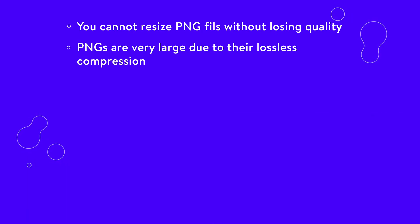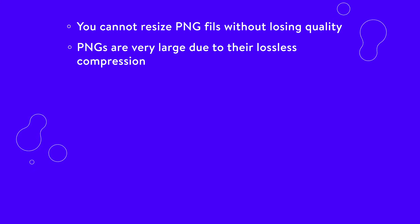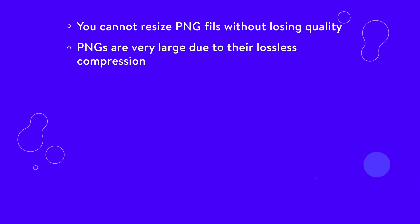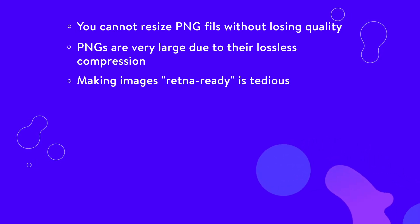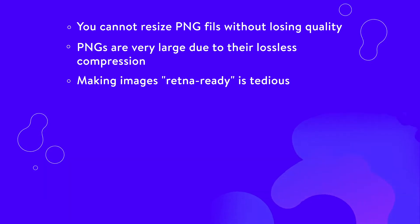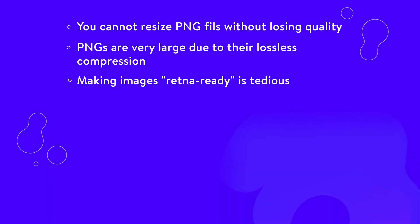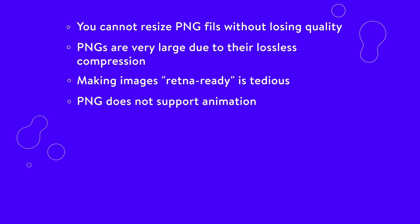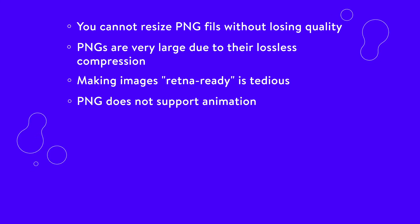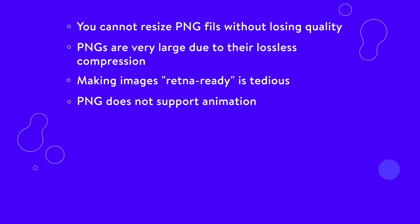PNGs are very large due to their lossless compression, so they can slow down your website. Fixing this requires compressing it even more and damaging the quality. Making images retina-ready is more tedious with PNGs and more likely to cause blurriness. PNG does not support animation. Other animated raster file types like GIFs can cause serious problems — for instance, GIFs are super slow quality and only support 256 colors.